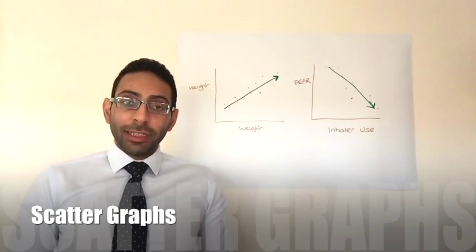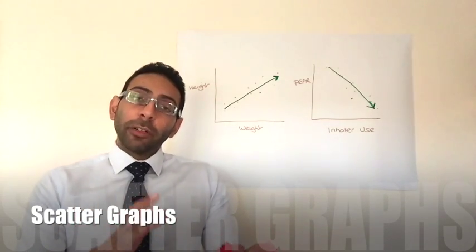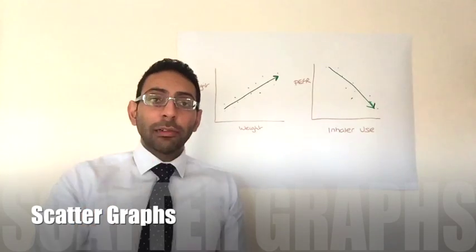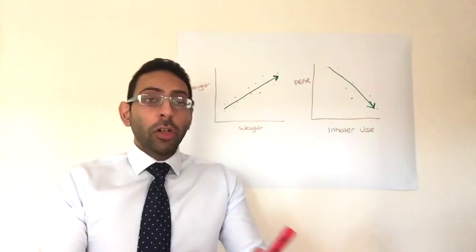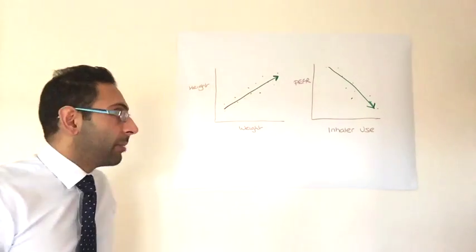So first we're going to look at the simple stuff, scatter plots. Now these are all about looking for correlation of results. So if you get a number of set of values, you plot them in a graph, you look and see is it a positive correlation, is there a negative correlation, or is there just no correlation at all? So let's have a look at a couple of examples.